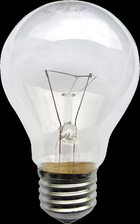Incandescent bulbs are manufactured in a wide range of sizes, light output, and voltage ratings, from 1.5 volts to about 300 volts. They require no external regulating equipment, have low manufacturing costs, and work equally well on either alternating current or direct current.